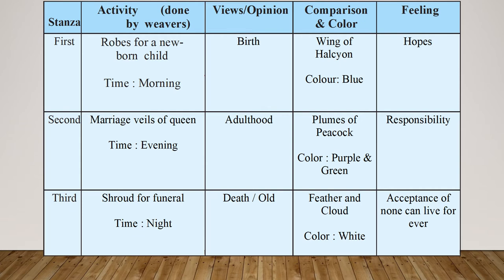In the second stanza, the weavers are working in the evening and they are weaving a marriage veil of a queen. Marriage can relate to adulthood. In adulthood, people mostly focus on earning and there is a sense of responsibility. The garment is described in the colours of purple and green, according to the poet.